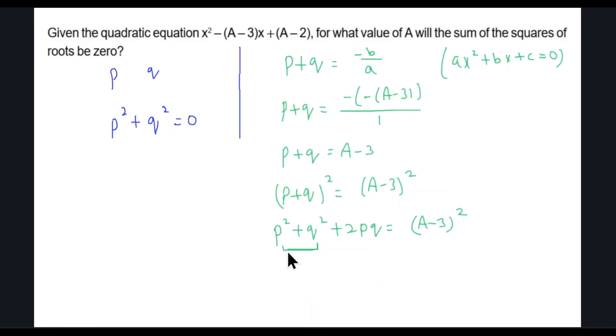So P plus Q whole squared will equal A minus 3 squared. If you open this up, we'll be left with P squared plus Q squared plus 2PQ equals A minus 3 whole square. We need to find P squared plus Q squared. PQ is the product of the roots.